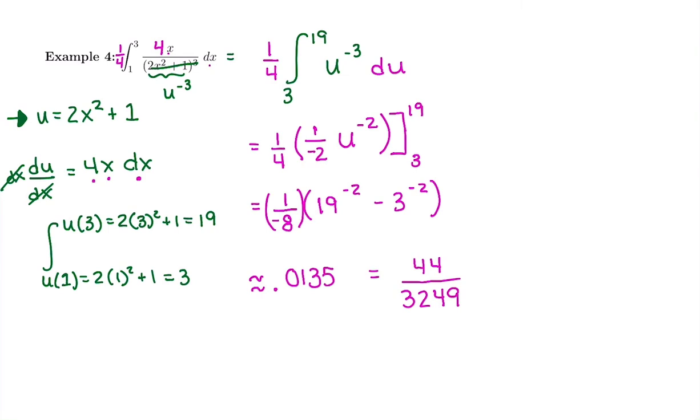Which is 44 over 3249. This is called the exact answer, and this is the approximate if we needed it rounded.